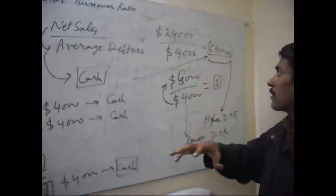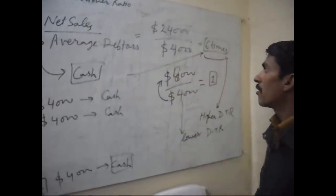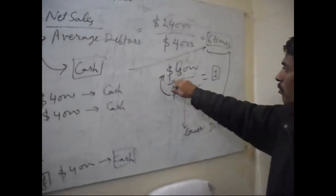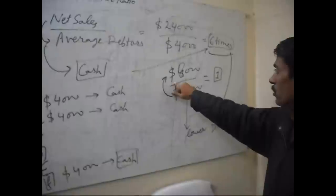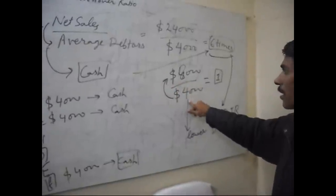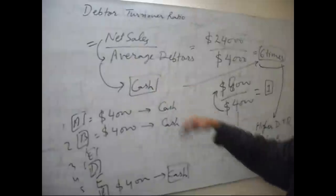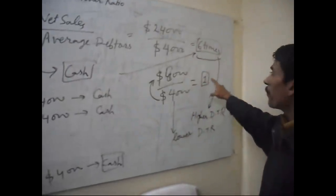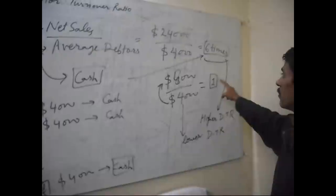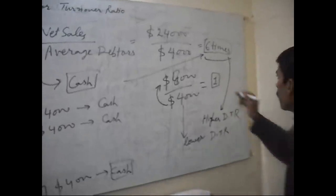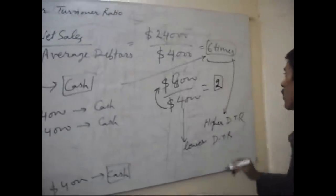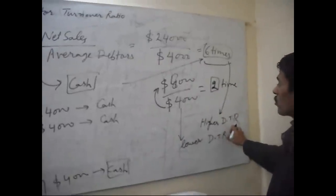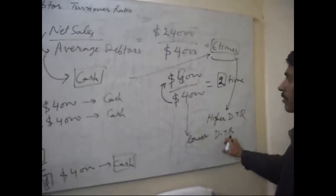Total debtors are 6 times of net sale. If total net sale is $8,000 and average debtors is $4,000, then debtor turnover ratio is 2 times. This is a higher debtor turnover ratio and this is a lower debtor turnover ratio.